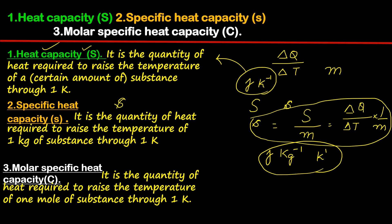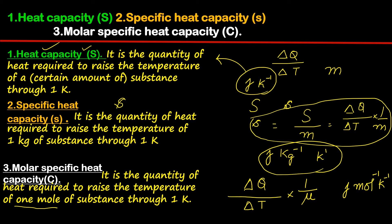The third quantity is molar specific heat capacity, capital C. It is the quantity of heat required to raise the temperature of one mole of the substance through one K. Here mass is given in moles, not kilograms. The formula is delta Q divided by delta T multiplied by 1 by mu, where mu is the number of moles. The unit is joule per mole per K.